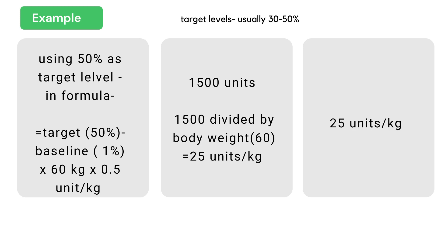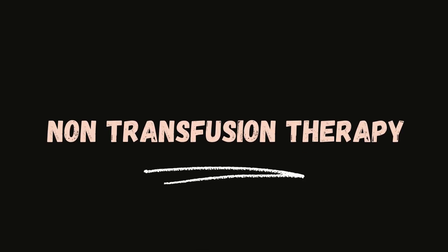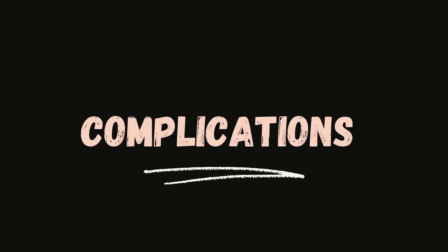For example, using 50% as the target level, if the baseline level of the patient is 1%, and the patient weighs 60 kg: (50 minus 1) multiplied by 60 multiplied by 0.5 gives approximately 1500 units, which is 25 units per kg. Cryoprecipitate is used to replenish clotting factors in severe cases. Non-transfusion therapy includes use of desmopressin and antifibrinolytic drugs like tranexamic acid.